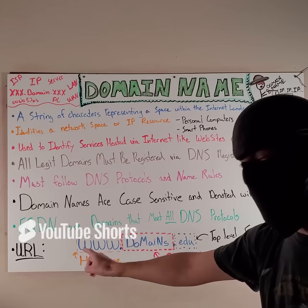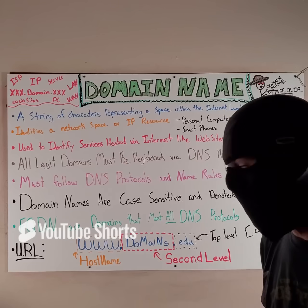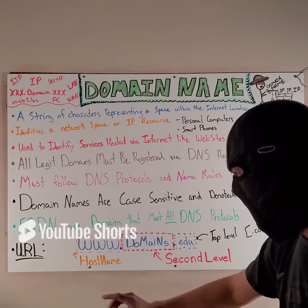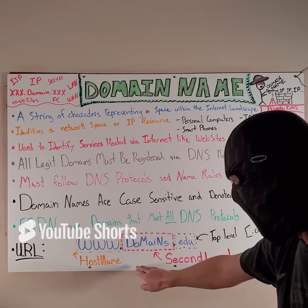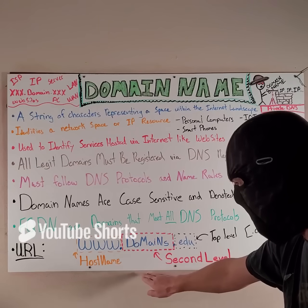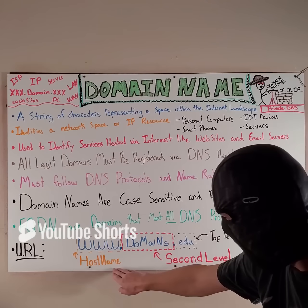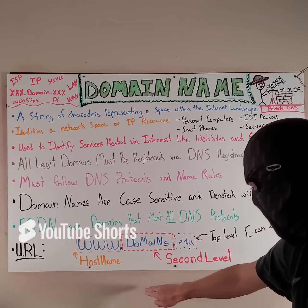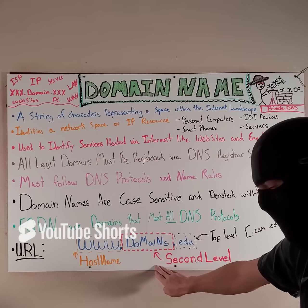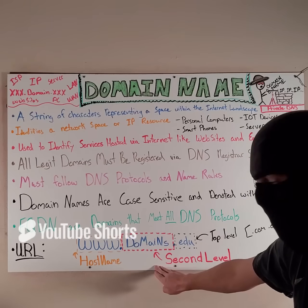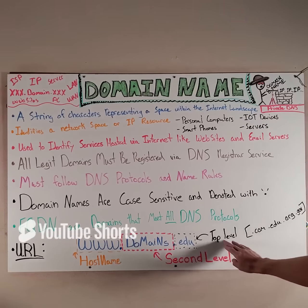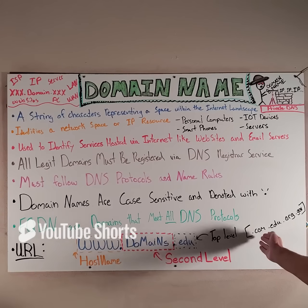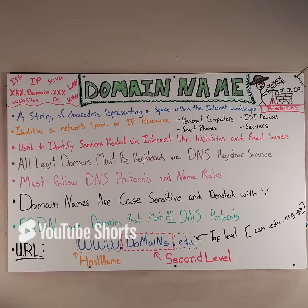A domain is not a URL. A URL actually consists of a hostname, a secondary level domain, and a top level domain like .com, .edu, .org, or .gov.